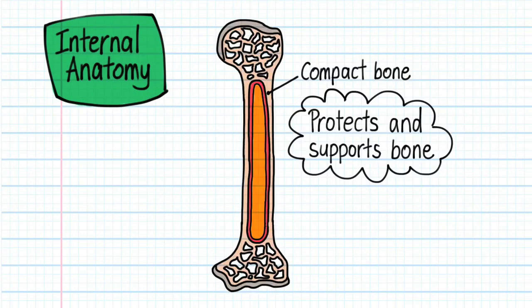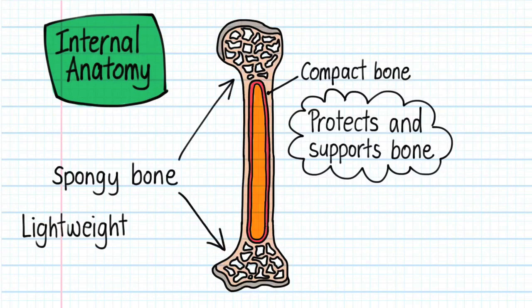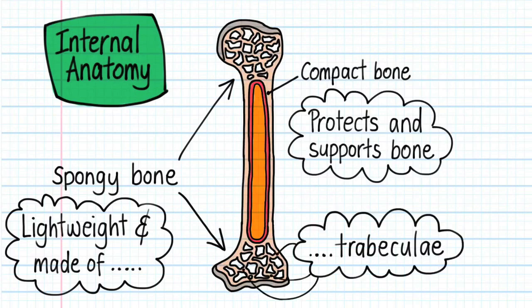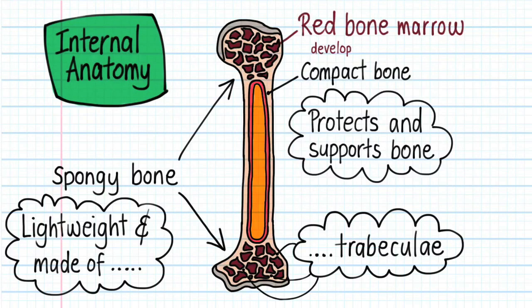The epiphyses are made of spongy bone which is lightweight and made of a latticework of irregular sheets of bone called trabeculae. Filling the spaces between these trabeculae is red bone marrow. Red bone marrow is mostly composed of developing red and white blood cells and platelets.